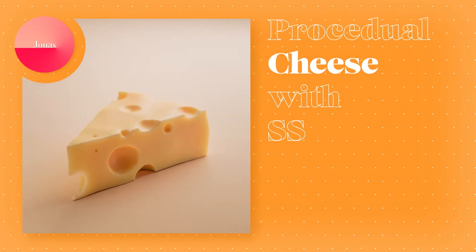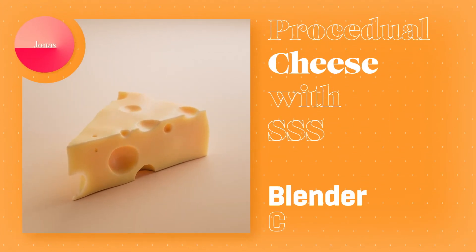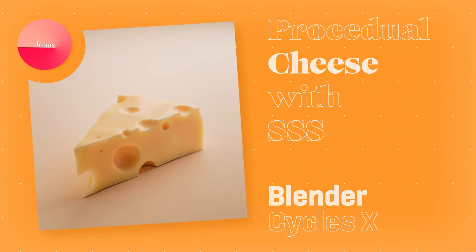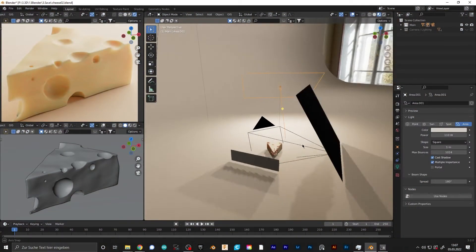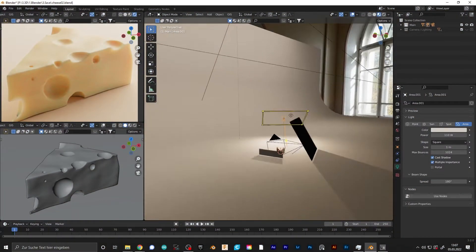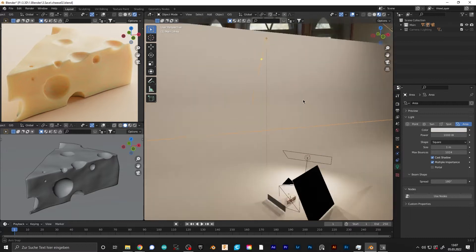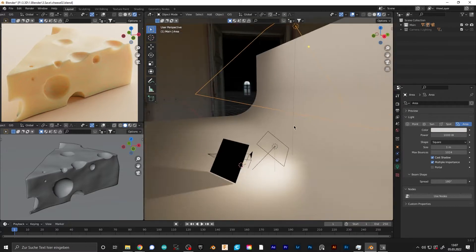Welcome back to a new tutorial. Today I'm going to show you how to make fully procedural subsurface scattering cheese in Blender. I already made a basic scene with a background and a cheese model.